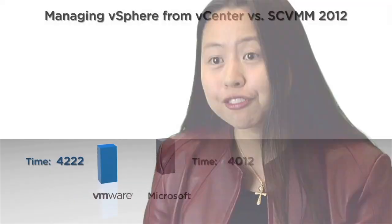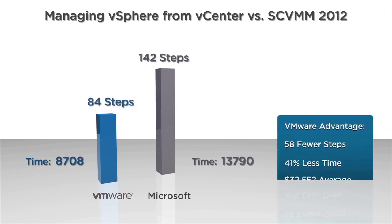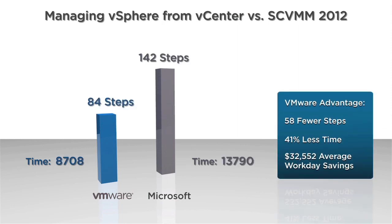The analyst firm Edison Group used their comparative management cost study methodology to prove just that. The results of their research show that administering a VMware vSphere virtualized IT environment using vCenter is 36% less time-consuming and 41% less complex than administering VMware vSphere using Microsoft System Center 2012 Suite. This can be directly translated into significant OpEx savings for customers.